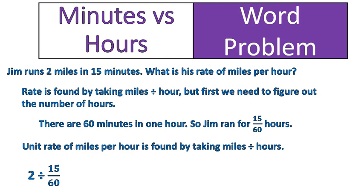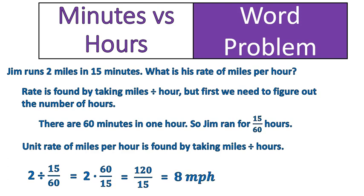Now we just need to solve this division question with fractions. To solve division of fractions, we multiply by the reciprocal — we keep the first number the same, change it to multiplication, and then flip over the second fraction. 15 over 60 becomes 60 over 15. Then we multiply 2 times 60, which gives us 120. The denominator remains the same, and 120 divided by 15 tells us that Jim is running at 8 miles per hour.